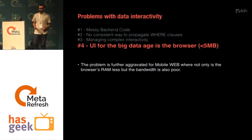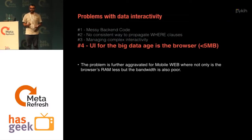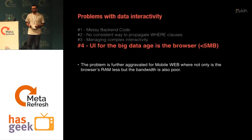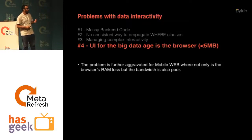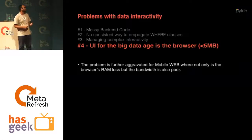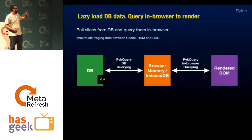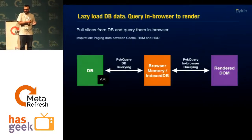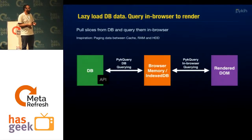The next big problem with data interactivity is how do you query in browser? There are various open-source libraries that try to address this, like Love Field from Google. This is especially important for mobile since you always have bandwidth issues. You have the DB, you write a PyQuery object, send it to the DB, it returns the data, and once it's in the browser or in IndexedDB, you can use another PyQuery object — change the adapter to in-browser — and query the data which is inside the browser.